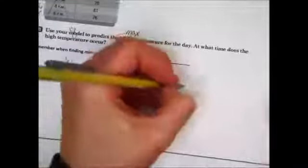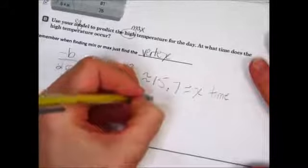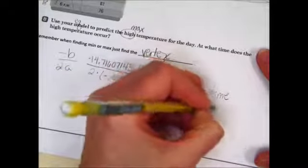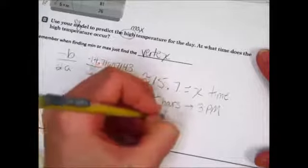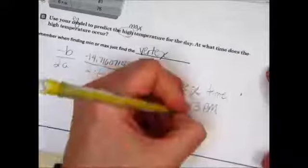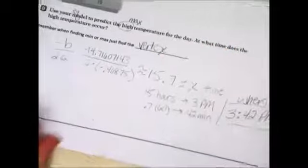So approximate is 15.7. Now think about what that represents. In our problem, what is the x value? Well, the x values are the times. So that is the time. Can we make sense of this? 15 hours. 15 hours is noon plus three, it's 3 p.m. And 0.7 times 60 will tell us how many minutes that is. So 0.7 times 60 makes 42 minutes. So the time is 3:42 p.m. That will be our max. That'll be when it happens.